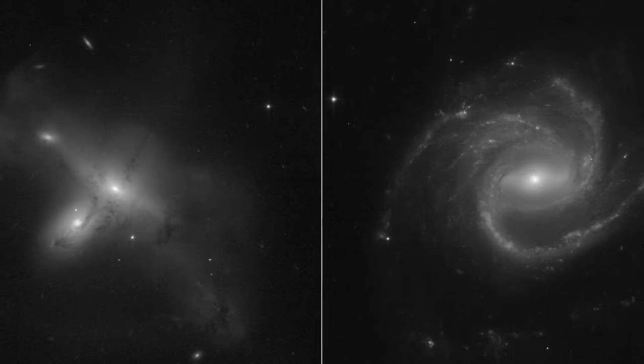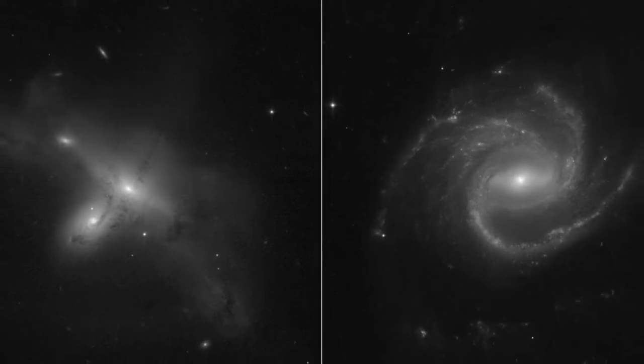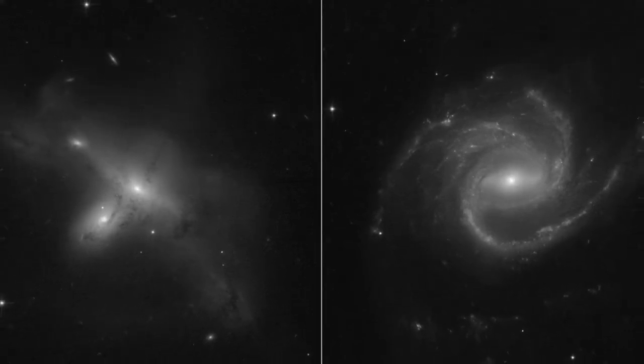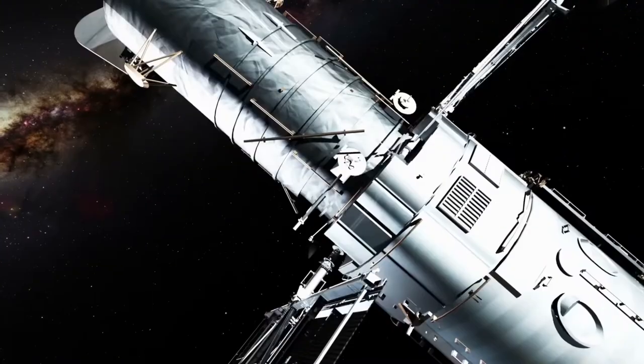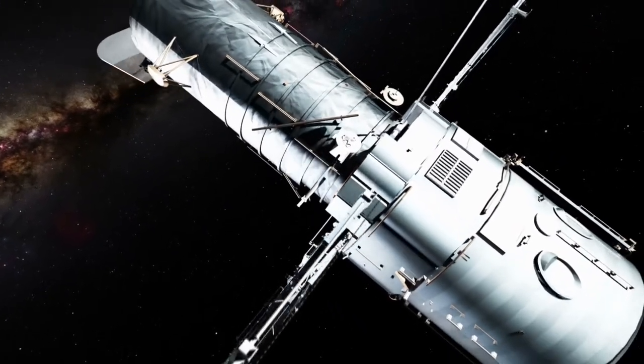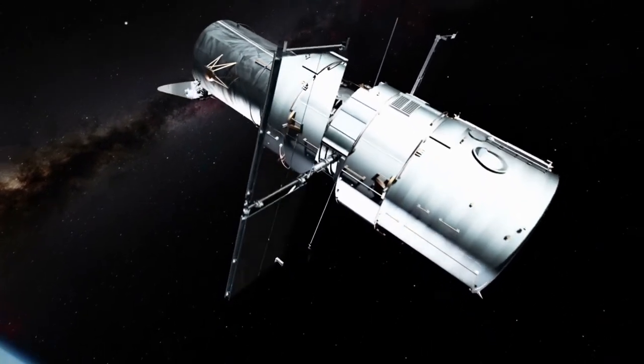In December 1993, the first new images from Hubble reached Earth, and they were breathtaking. Ever since then, the telescope has continued to make major discoveries and expand our knowledge of the cosmos.